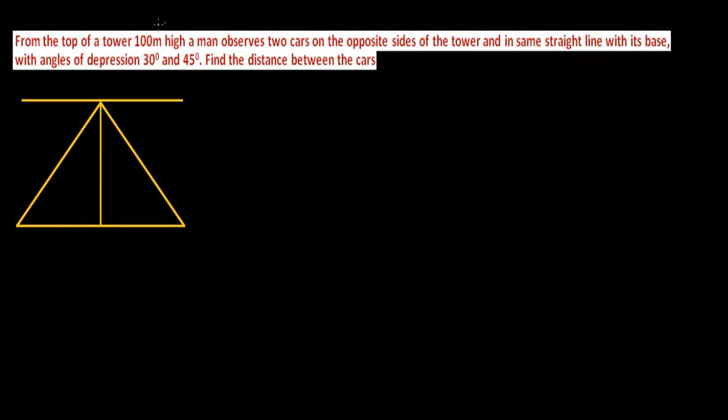Hello everyone, today's question is: from the top of a 100 meter high tower, a man observes two cars on the opposite sides of the tower and in the same straight line with its base with angles of depression 30 degrees and 45 degrees. Two angles are given to us. Find the distance between the cars.